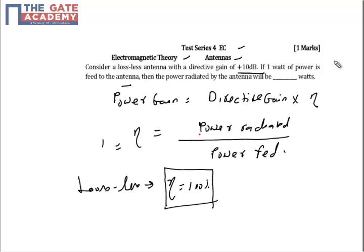If the efficiency is 100%, which in dB is 1, then power radiated is equal to the power fed. So power radiated will be equal to the power fed, which will be 1 watt. If the power fed is 1 watt, power radiated will also be 1 watt.